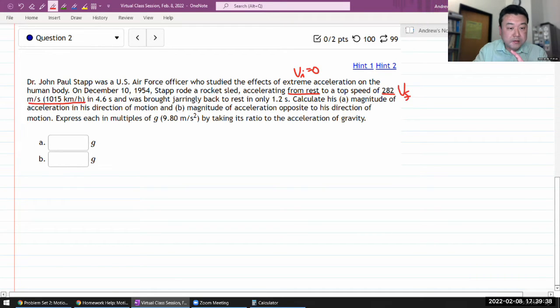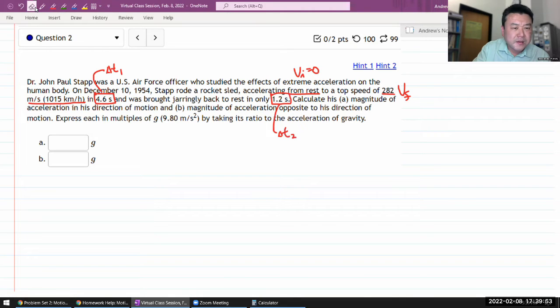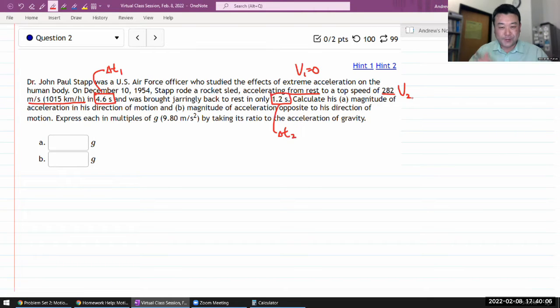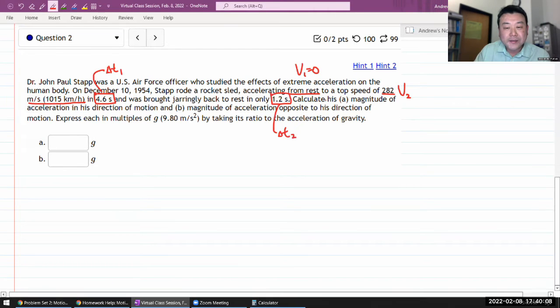In some amount of time delta t and was brought back to rest in only, oh let me call this delta t1 and call this delta t2. In fact, let me get rid of that initial final label. Instead, let's call it v1 and v2 because I think I'm gonna be using them in a couple different contexts. Final isn't always final.